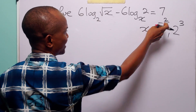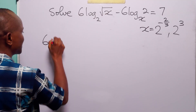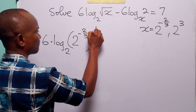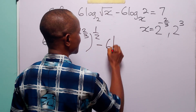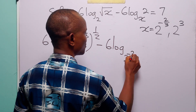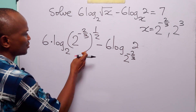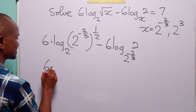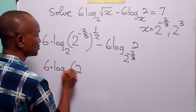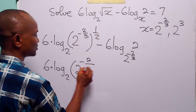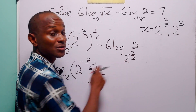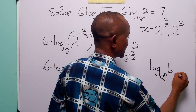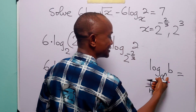When x equals 2 to the power minus 2 over 3, the equation becomes 6 times log to base 2 of (2 to the power minus 2 over 3) to the power half, minus 6 times log to base (2 to the power minus 2 over 3) of 2. To remove the bracket, we multiply the two powers, giving 2 times half is 1 and 3 times 2 is 6. Now recall that log to base a^n of b equals 1 over n times log to base a of b — that is the reciprocal of the power.